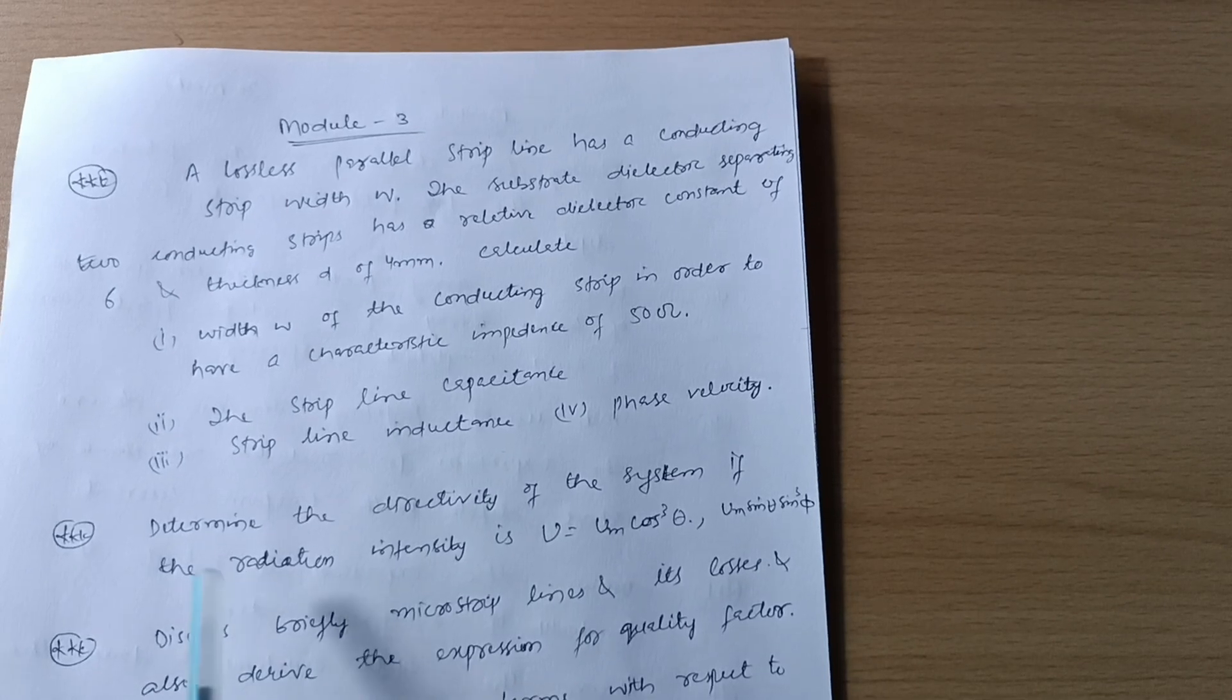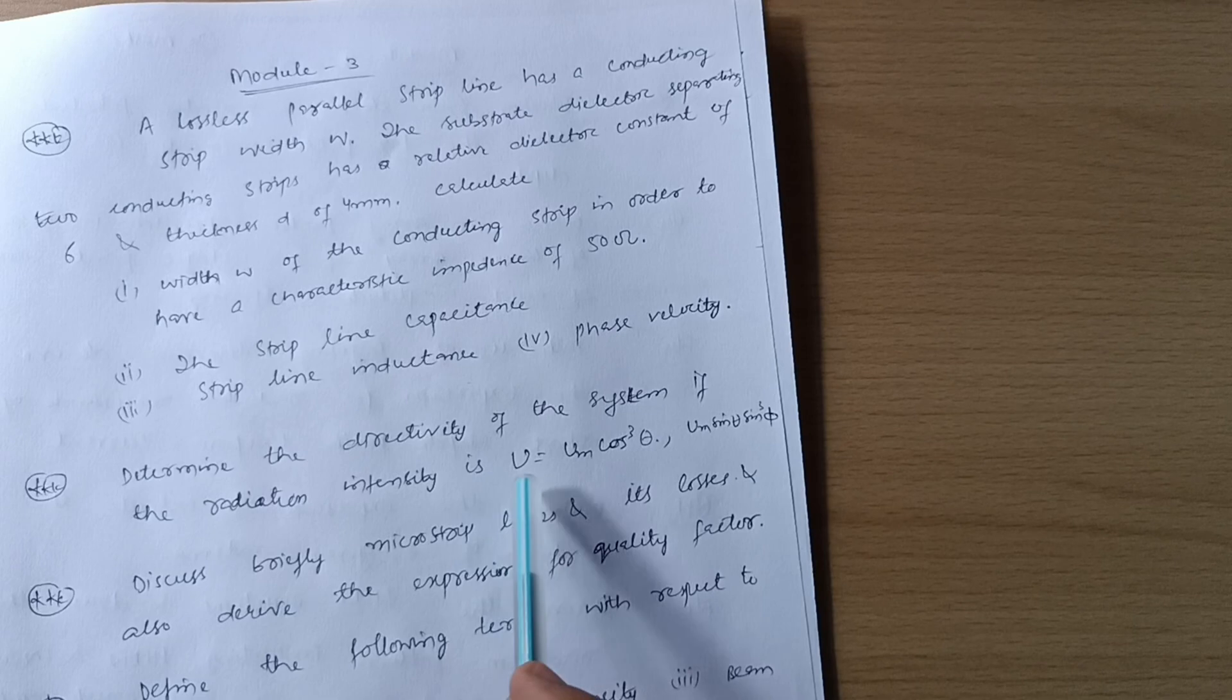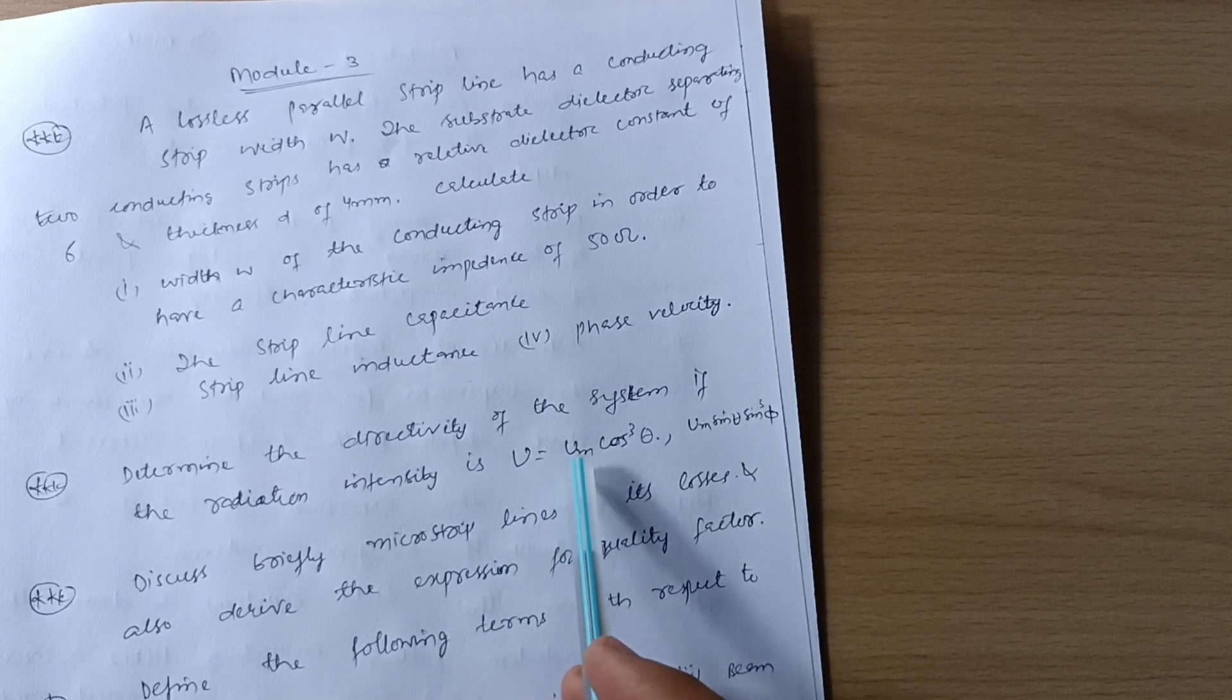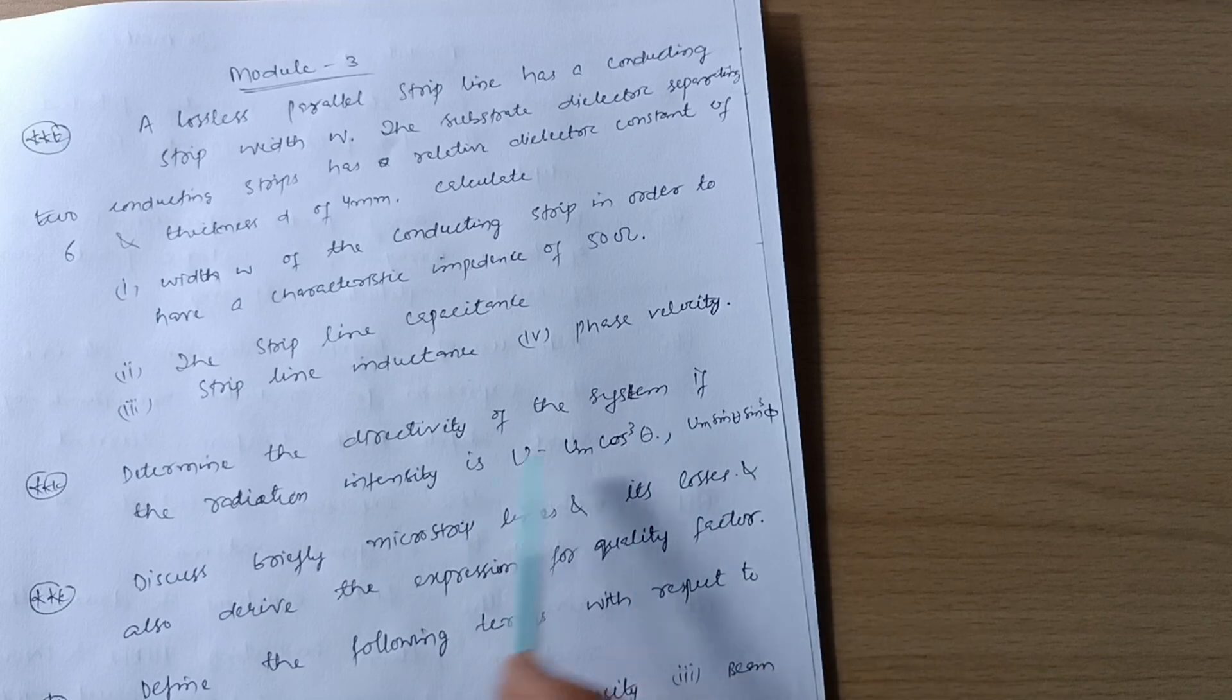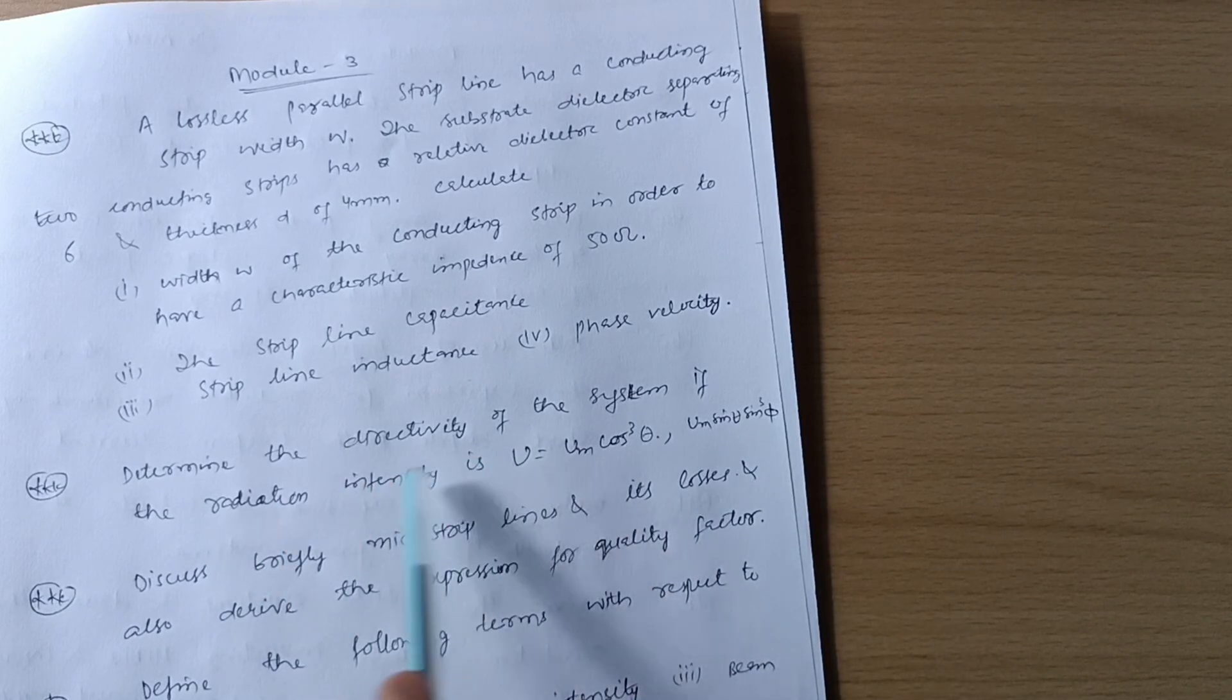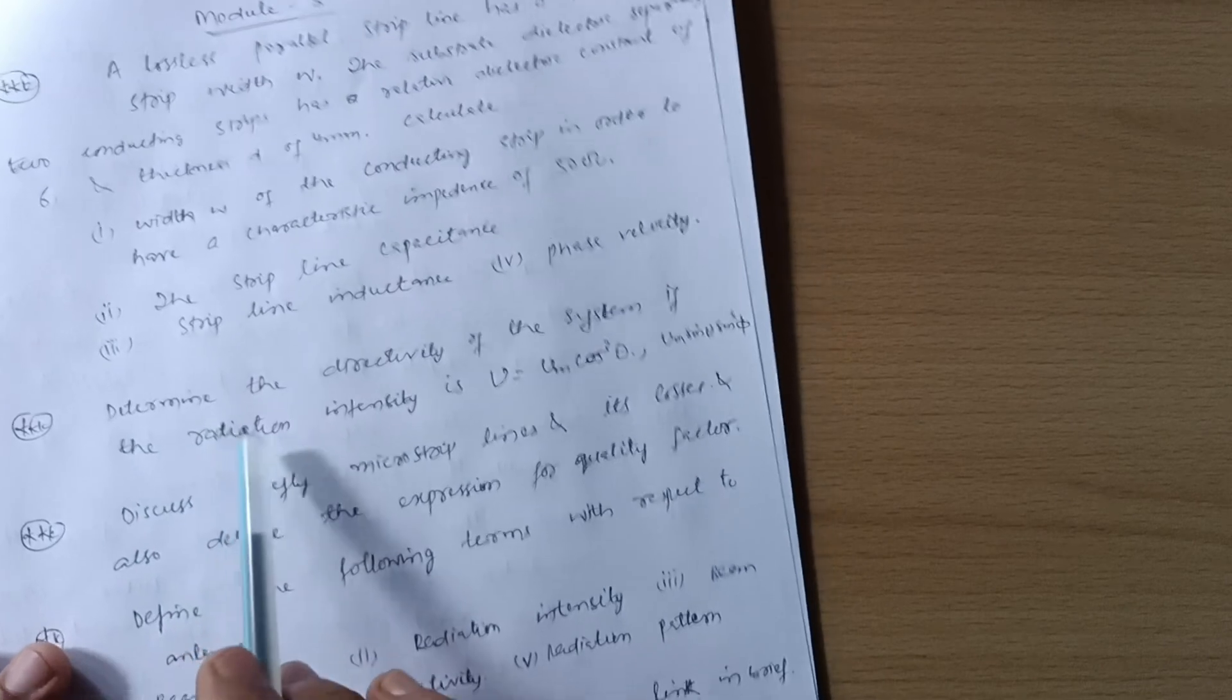Next is determine the directivity of the system if the radiation intensity is U, which is equal to Um cos cube of theta, or Um sine theta sine squared of phi. So four to five problems you should practice on the directivity of the system, where you are supposed to calculate or determine the directivity.